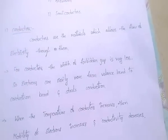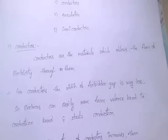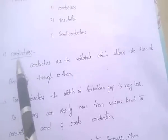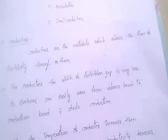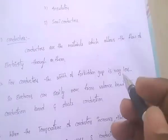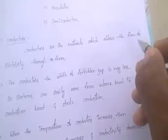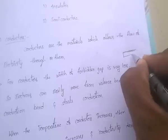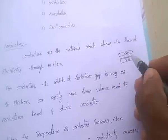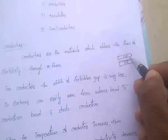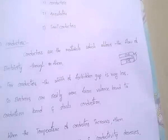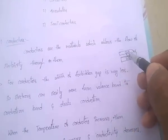Conductors are materials which allow the flow of electricity. For conductors, the width of the forbidden gap is very less — that is, the gap between the valence band and conduction band is very less. So electrons can move from valence band to conduction band very easily.